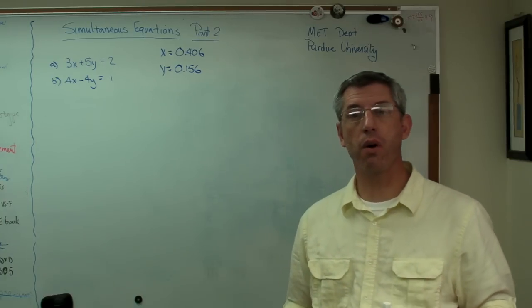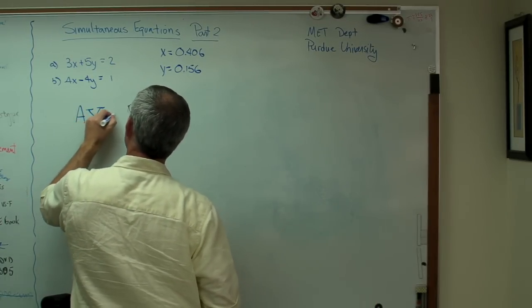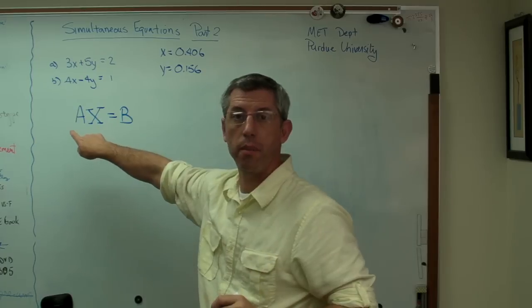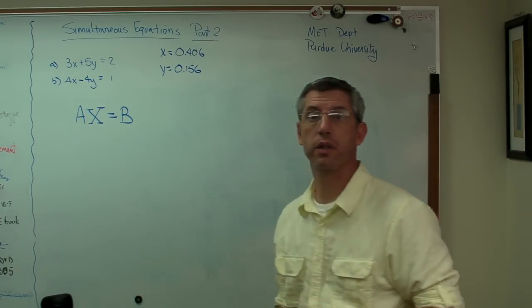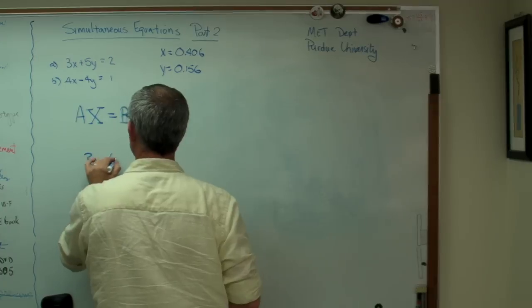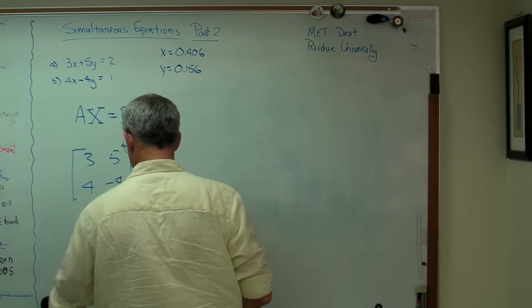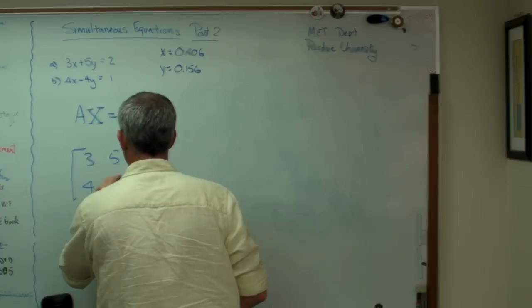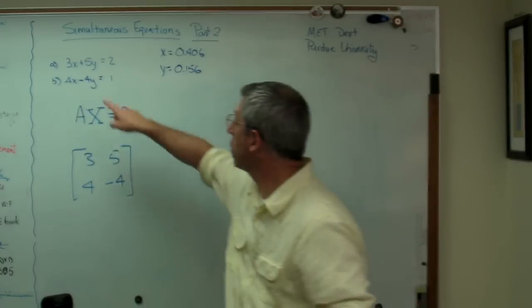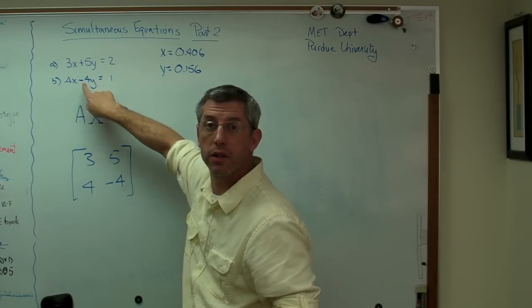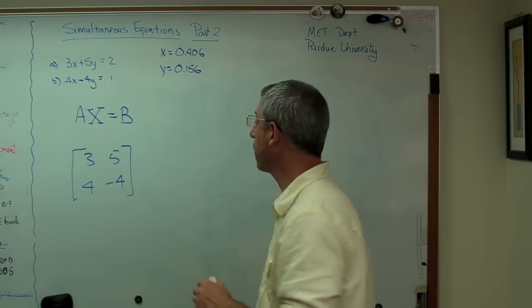And most of what we're going to do is really more about notation than anything else. So let's write this out as a matrix equation. We originally had this written out this way, where this was a matrix, a vector, and a vector. The matrix is composed of the coefficients of this equation: 3, 5, 4, and minus 4. That's the coefficients. Notice that the x's and the y's are in the same order in both equations. That's important or else you're not going to get these numbers in the right order.